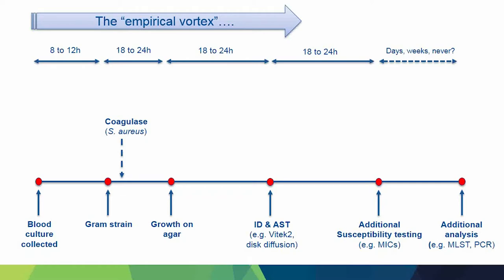We have a few phenotypic tests like coagulase for Staph aureus, and simple bench tests that give us clues — is this a Pseudomonas or an E. coli? We can do direct susceptibility tests from blood culture which give us early warning about whether this could be a very resistant strain. But it's about as much as we can do in terms of pushing the envelope. And the problem is this leaves the patient in what I think of as an empirical vortex — we know they're sick, we know they probably have an infection, but we only get incremental bits of information over time, causing confusion. Patients often end up having about 20 different treatments in the meantime.